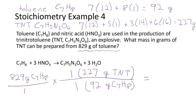When we have ones, we don't need to type them into the calculator since multiplying and dividing by one doesn't change the value. So this will be 829 times 227 divided by 92, and that gives us 2045 grams of TNT.